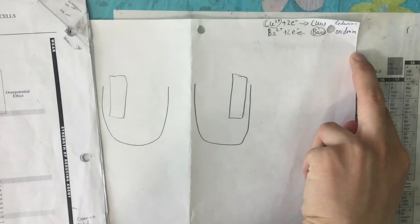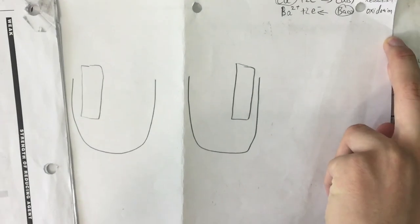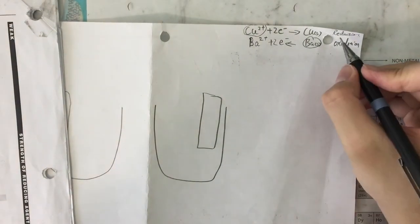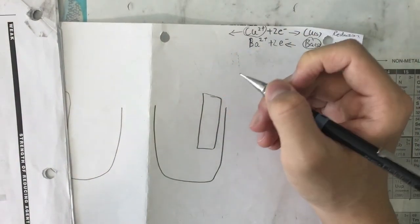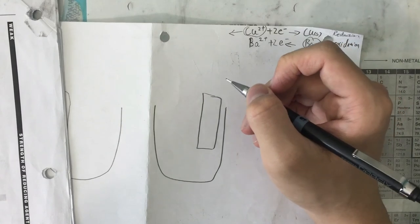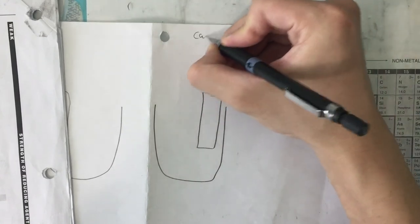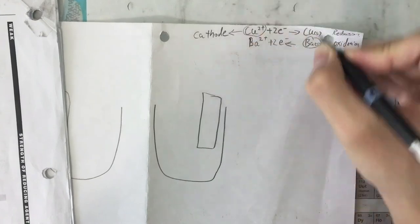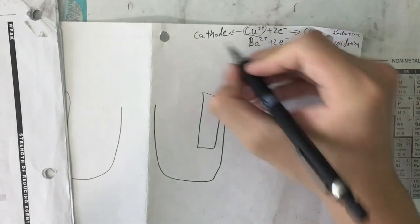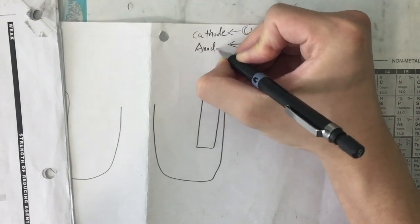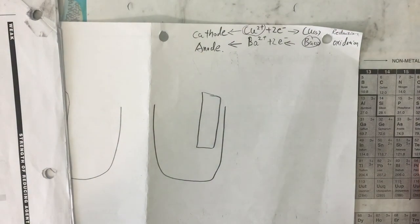When we know reduction and oxidation, we know that reduction at the metal electrode is called the cathode, and for oxidation the electrode is called the anode.